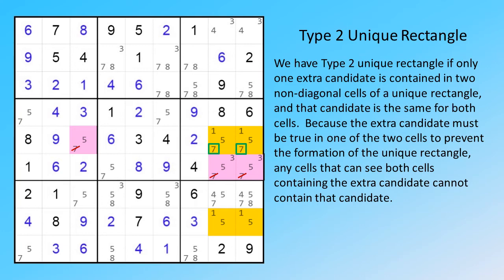Because the extra candidate must be true in one of the two cells to prevent the formation of the unique rectangle, any cells that can see both cells containing the extra candidate cannot contain that candidate.